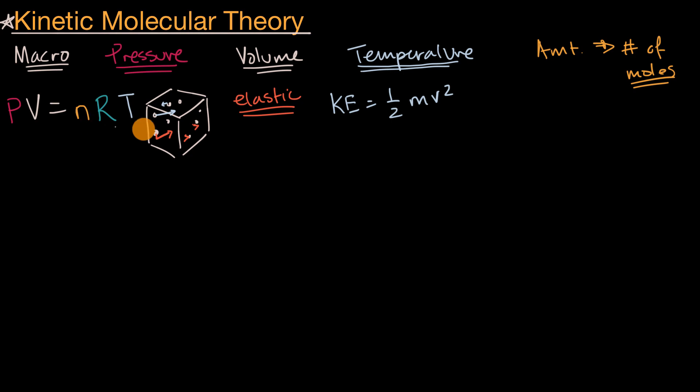And of course, n, the number of moles, tells us how many particles we're dealing with. We know that each mole has Avogadro's number of particles. So if you just multiply the moles times Avogadro's number, you have the number of particles.